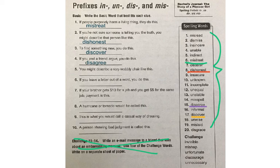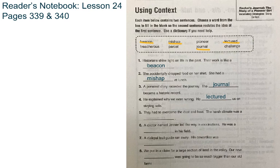Number five: You might describe a very wobbly chair like this. We have the word unstable. If a chair is very wobbly, it is likely unstable. All right, kiddos, you're going to complete six through ten on your own. When you have finished pages 339 and 340, please take a picture of your work, attach it to the assignment, upload and turn it in on Teams. Thank you.